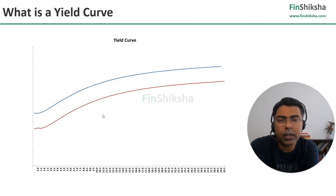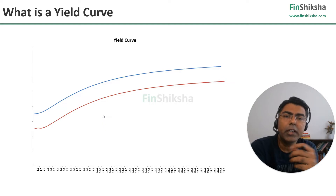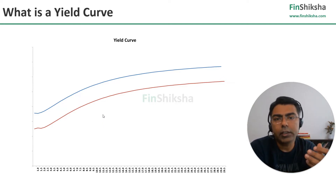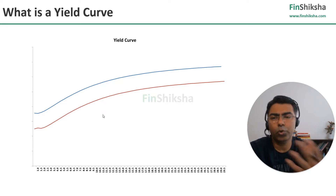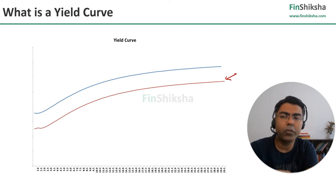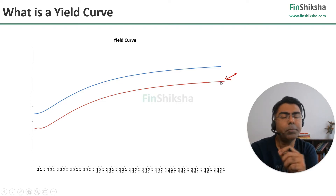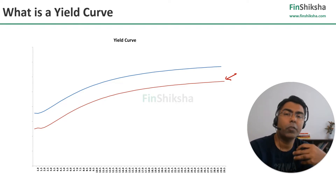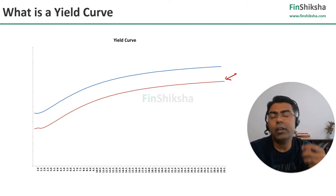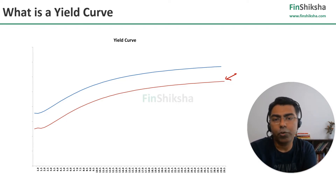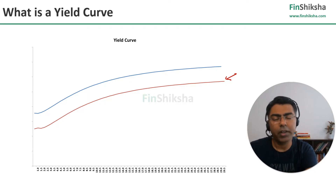The Yield Curve essentially tells you how much return you would expect on a particular Bond depending on its maturity or tenure. Usually you will see that the Yield Curve would be in an upward sloping shape. Why? Because typically, if you give me money for one year versus ten years, the risk is more in ten years, and therefore you would expect a higher return for a ten-year instrument. That's the simple logic.